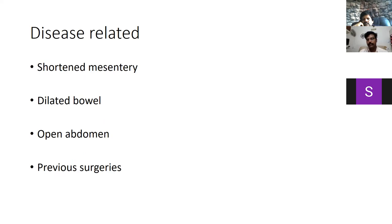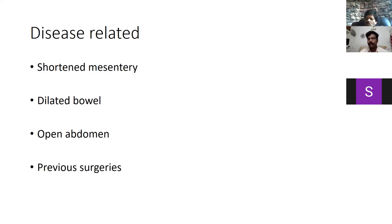What are the common disease-related issues we encounter? First is the shortened mesentery, which is typically seen in conditions like tuberculosis, malignancies, and carcinoid tumours. Sometimes even 5 to 10 days old perforation peritonitis — you are likely to have some amount of mesenteric reaction. It can also be a dilated bowel, typically when we come across a left-sided colonic malignant obstruction. In unfortunate situations, we might have to deal with an open abdomen as well as a stoma, which is actually a very difficult scenario to manage. Previous surgeries can also add to the issues.